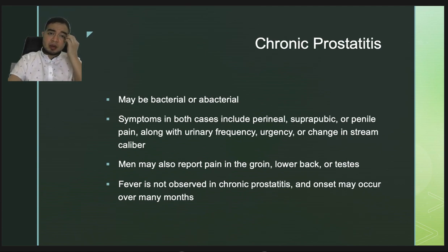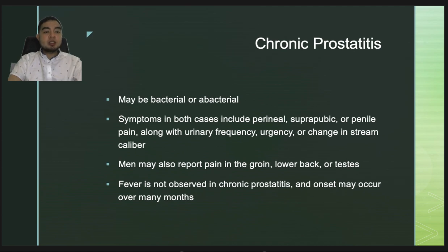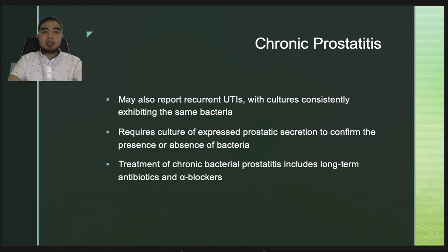Another entity is chronic prostatitis, which may be bacterial or abacterial. Symptoms in both cases include perineal, suprapubic, or penile pain along with urinary frequency, urgency, or change in stream caliber. Men may also report pain in the groin, lower back, or testis. Fever is not observed in chronic prostatitis, and onset may be over months. Patients with chronic bacterial prostatitis may report recurrent UTIs with cultures exhibiting the same bacteria.